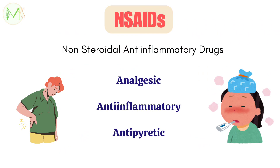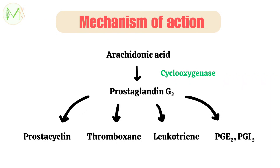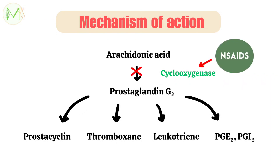As mentioned previously, NSAIDs have analgesic, anti-inflammatory, and antipyretic actions. Let's get to know the mechanism by which they do so. Prostaglandin G2 is produced from arachidonic acid by an enzyme called cyclooxygenase. Various other enzymes such as prostacyclin synthase, thromboxane synthase, lipoxygenase, and isomerases are responsible for production of prostacyclin, thromboxane, leukotriene, and prostaglandin E2 and I2 respectively. This is just an overview of the arachidonic acid pathway to understand NSAIDs' mechanism. NSAIDs inhibit the cyclooxygenase enzyme, thereby preventing the further steps of this pathway.